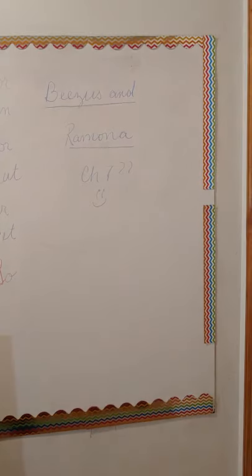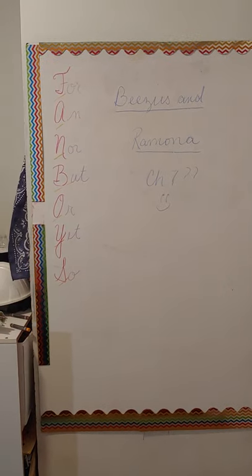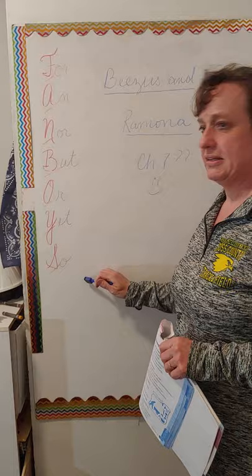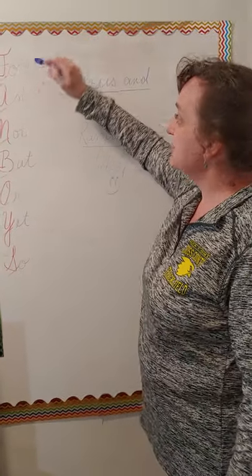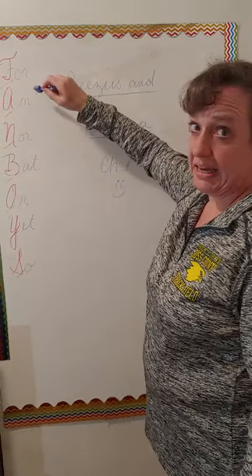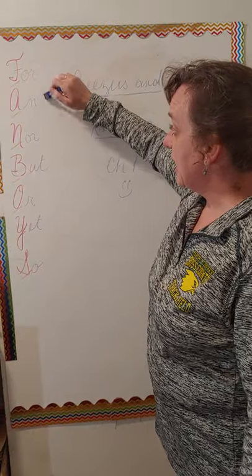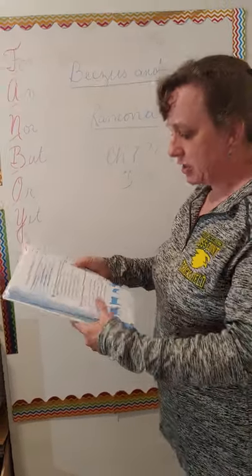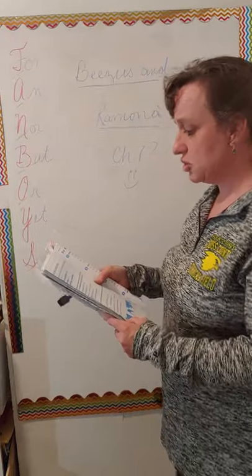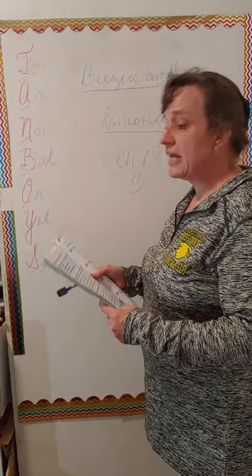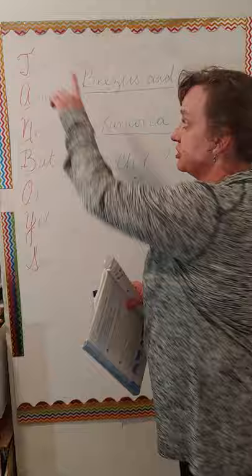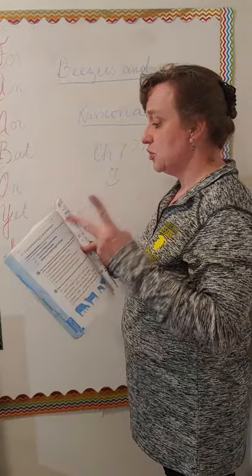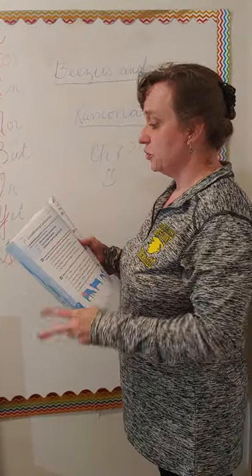Moving right along, our English today has to do with our fanboys. Remember our fanboys? For, and, nor, but, or, yet, so. We'll be working on page 92 of our English workbook. A coordinating conjunction - the coordinating conjunction is the name for your fanboys. A coordinating conjunction joins two words or groups of words.